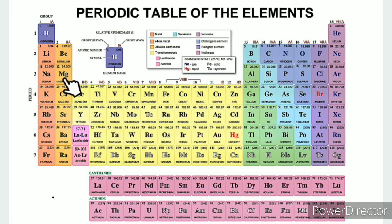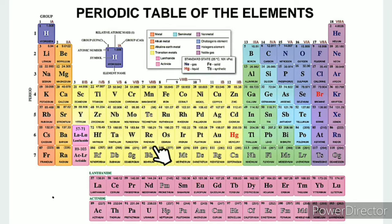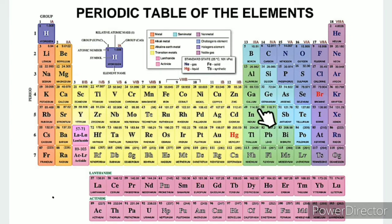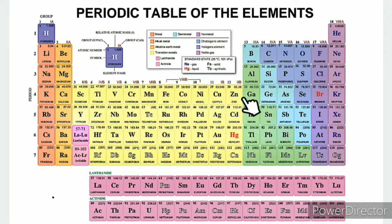Transition metals have features of both metal and non-metal character. In the p-block, the metals include Aluminum, Gallium, Indium, Thallium, Tin, Lead, and Bismuth. These are all classified as metals.